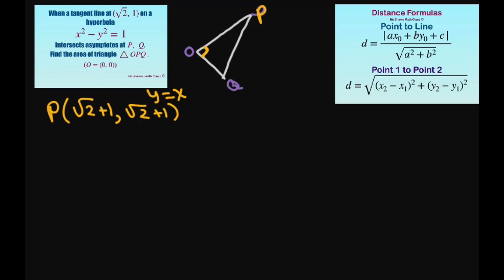For point Q, substituting y = -x: √2·x + x = 1, so (√2 + 1)x = 1, giving x = √2 - 1. Since y = -x, y = -(√2 - 1). So point Q is (√2 - 1, -(√2 - 1)).